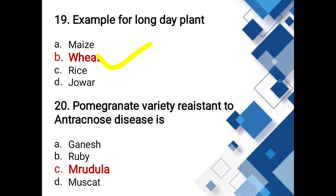Pomegranate variety resistant to anthracnose disease: options are Ganesh, Ruby, Bhagwa, Muscat. The answer is Bhagwa — this variety is the most resistant to anthracnose disease.